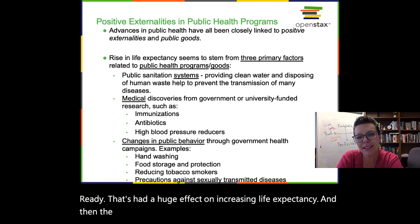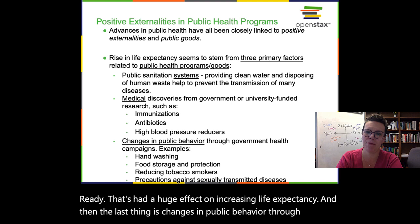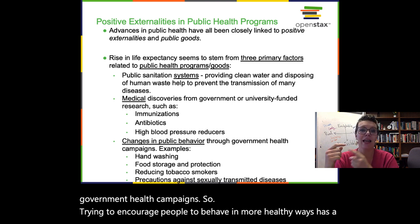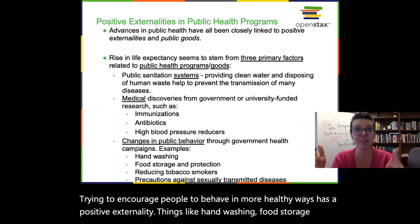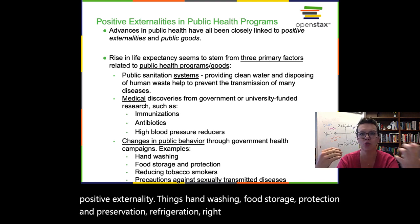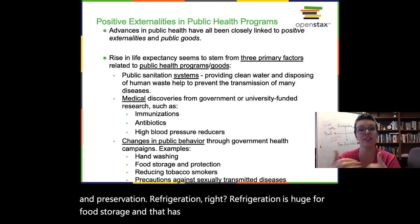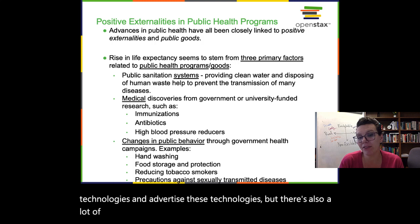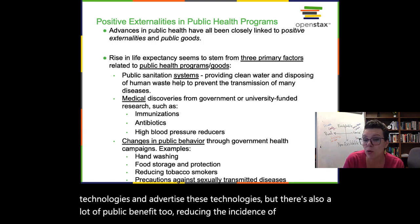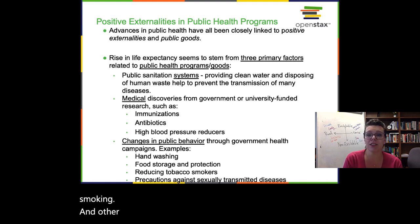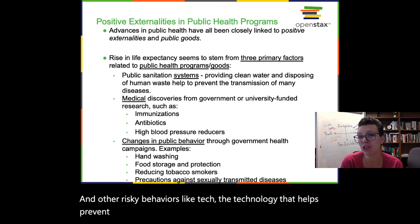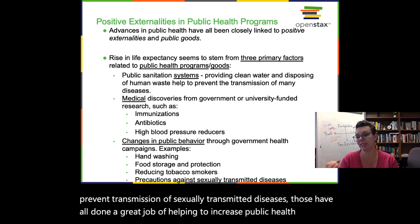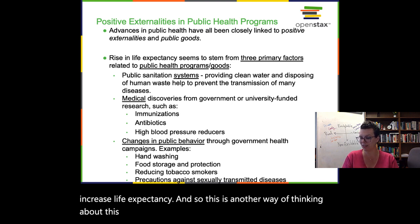The third factor is changes in public behavior through government health campaigns — trying to encourage people to behave in more healthy ways creates positive externalities. Things like hand washing, food storage protection, preservation, and refrigeration have a lot of positive externality benefit. There are private benefits to the people who invented and advertised these technologies, but there's also a lot of public benefit — reducing the incidence of tobacco smoking and other risky behaviors, plus technology that helps prevent transmission of sexually transmitted diseases. These have all done a great job of helping to increase public health and life expectancy.